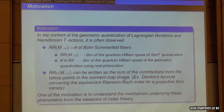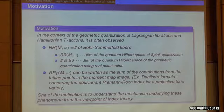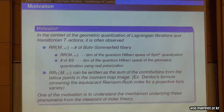The left-hand side, the Riemann-Roch index, corresponds to the dimension of the quantum Hilbert space of the spin-c quantization. The right-hand side, the number of Bohr-Sommerfeld fibers, corresponds to the dimension of the quantum Hilbert space of the geometric quantization using real polarization. This phenomenon suggests these quantizations are equivalent, at least at the level of pre-quantization.